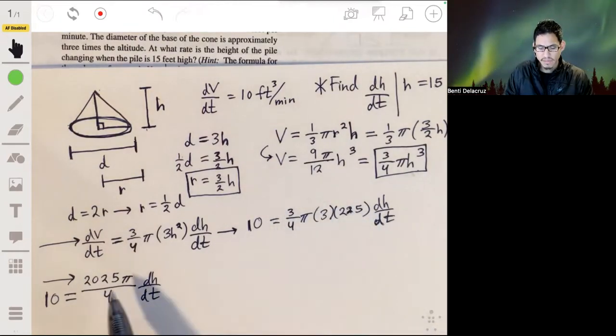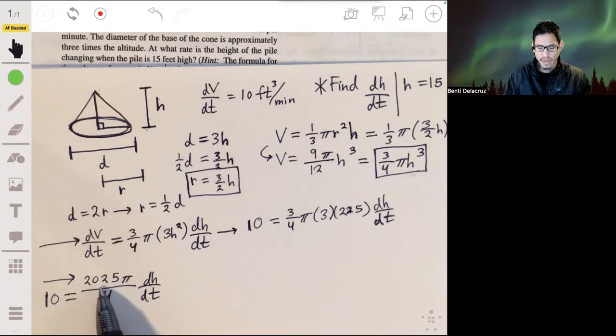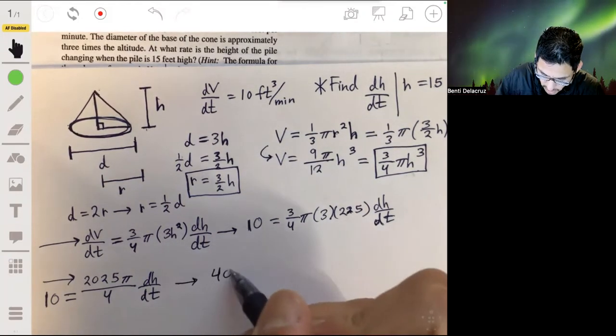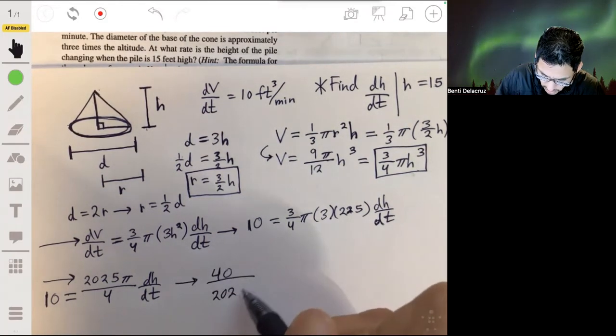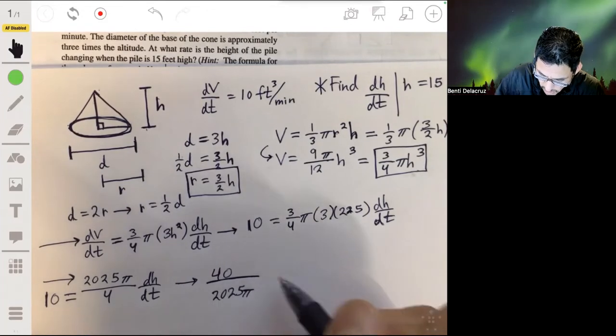10 equals this, I'm just simplifying, and then the rest is just you can do four times 10, 40 over 2025 will be dh/dt.